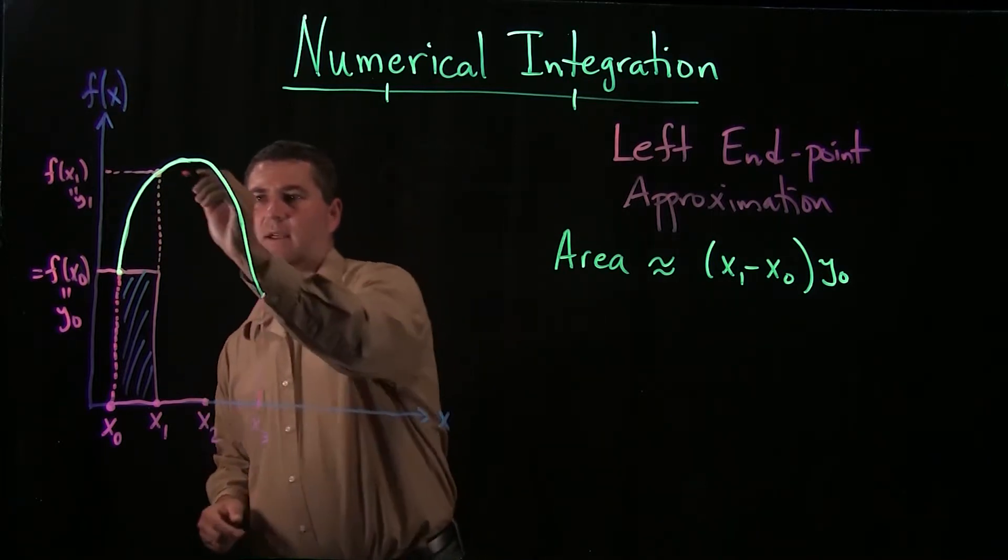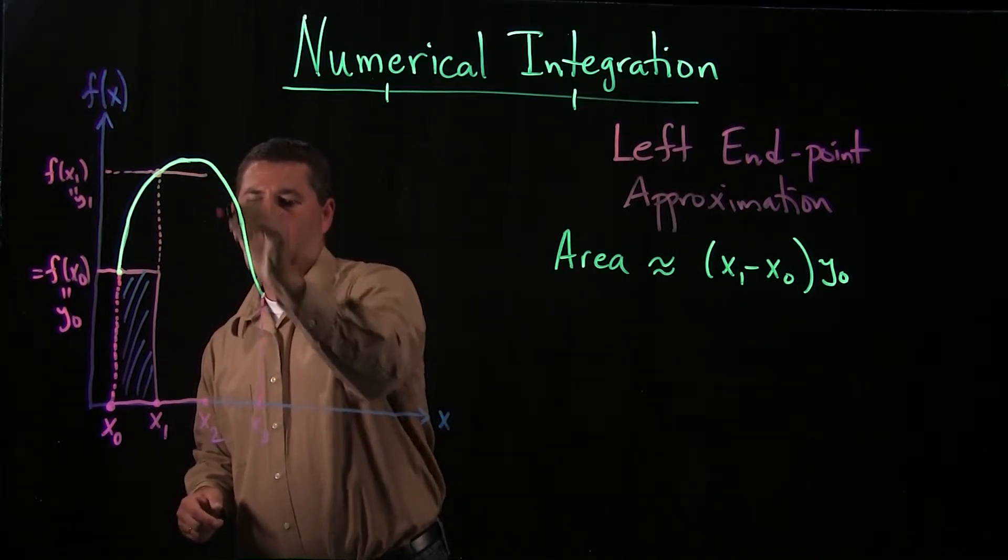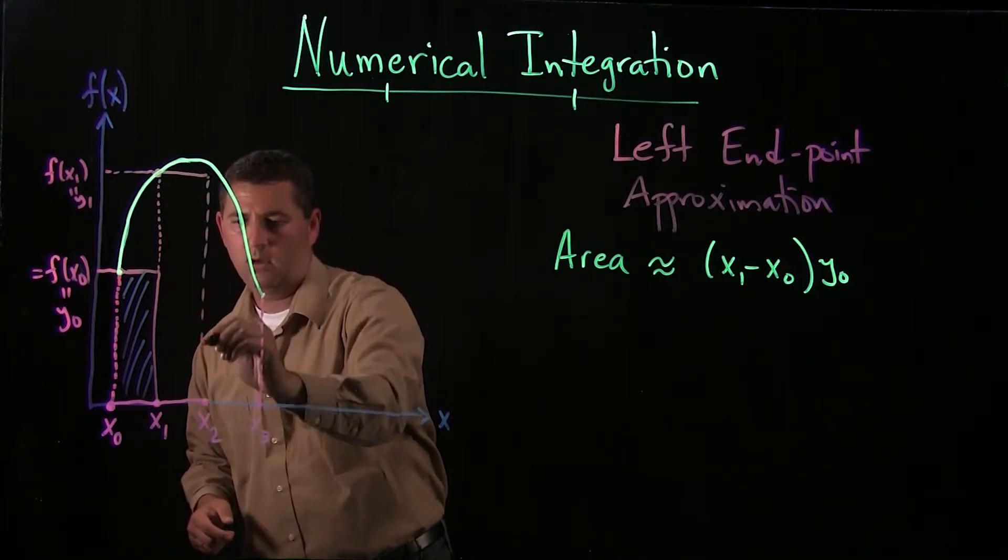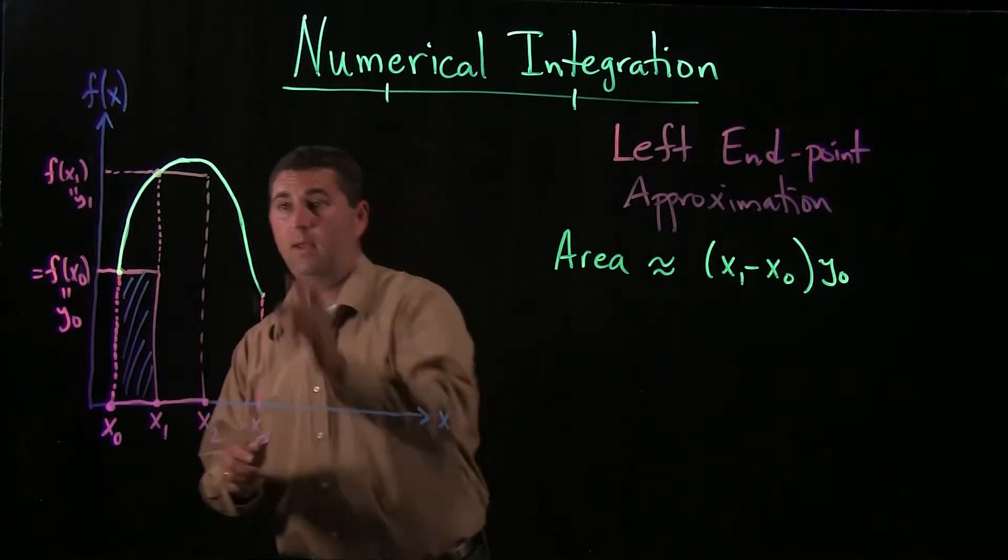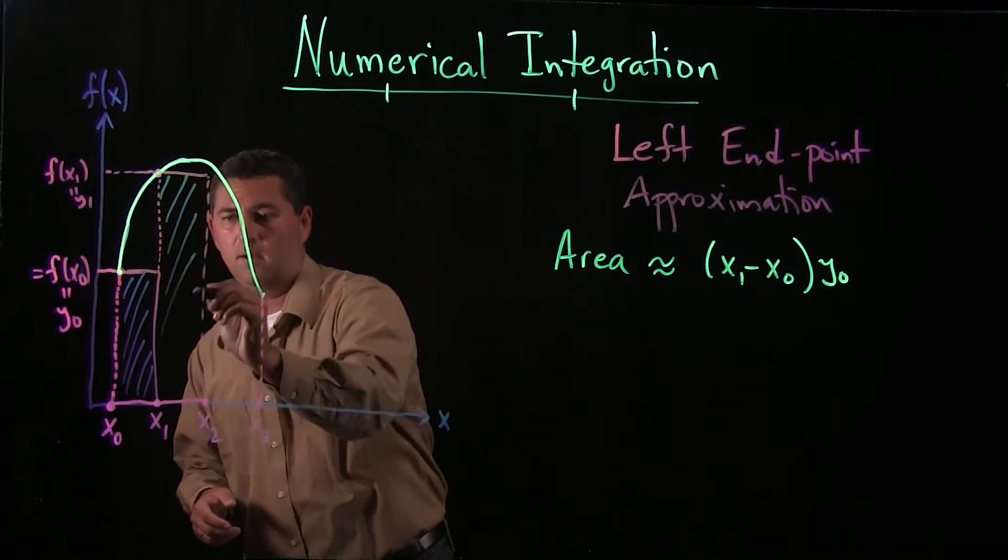That's our f of x1, or again, we'll just call this y sub 1. So that's the height of the rectangle. I go across to x2, make a rectangle, and now I get some more area.